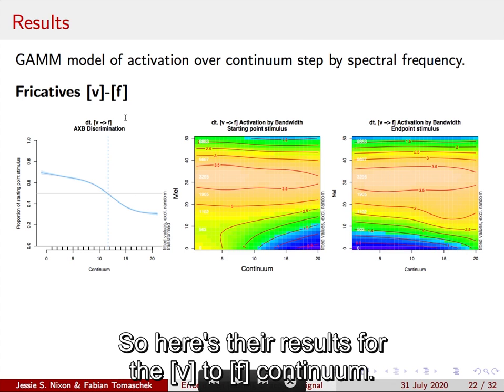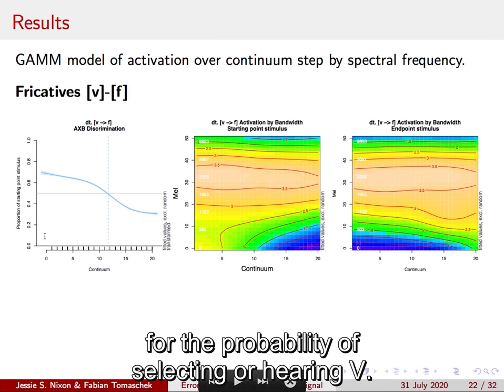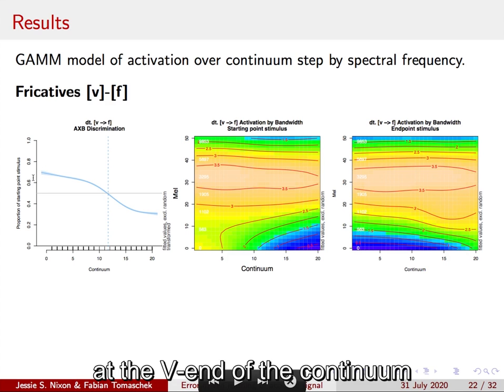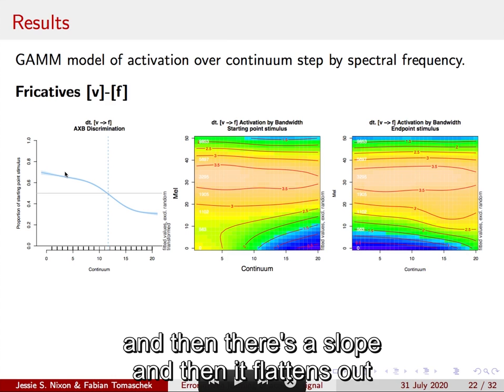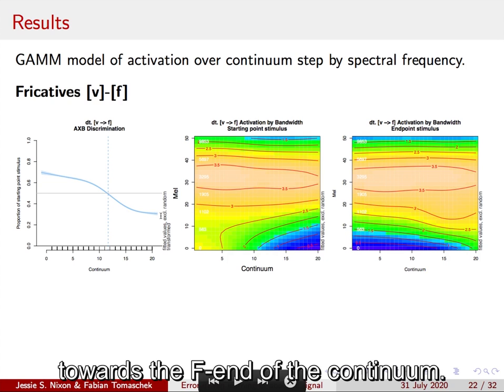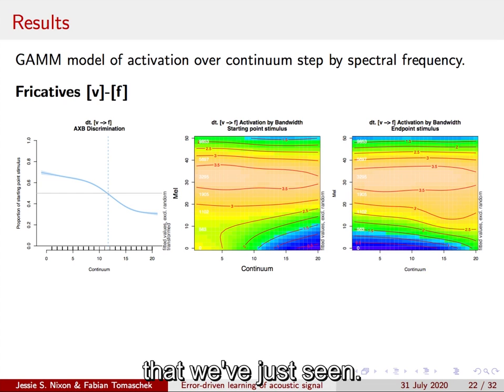So here's the results for the V to F continuum. On the left is the model estimate for the probability of selecting or hearing V. We see that it starts high on the left at the V end of the continuum, and then there's a slope and then it flattens out towards the F end of the continuum. This is the typical shape for consonant perception that we've just seen.